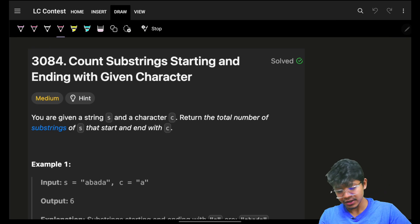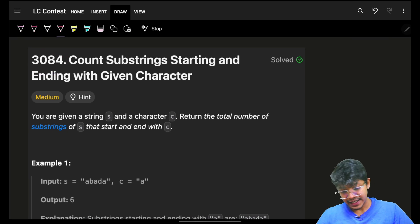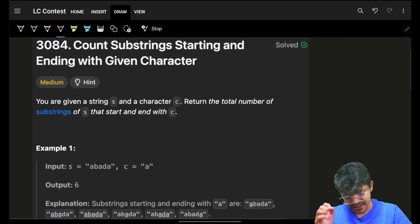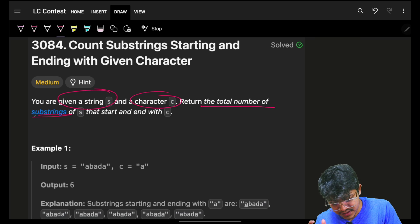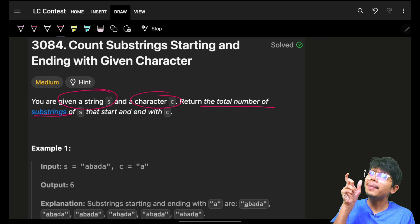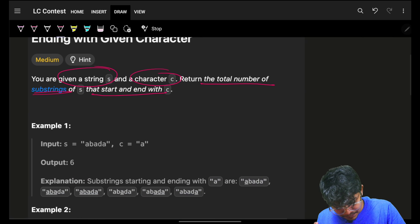Hello, hi guys, good morning, welcome back to a new video. In this video is program 3084, count substrings starting and ending with given character. It simply says that you are given a string s and a character c, and we have to return the total number of substrings. Again, substring, you know, a part or a portion of a string is a substring that starts and ends with c. So for example, in this case: